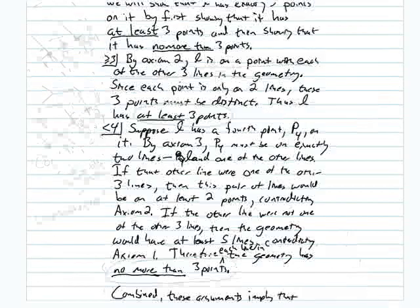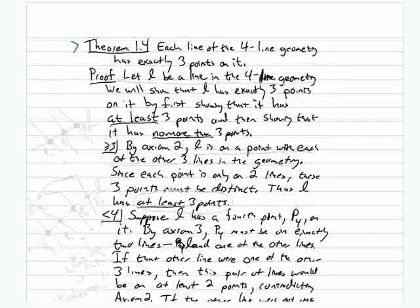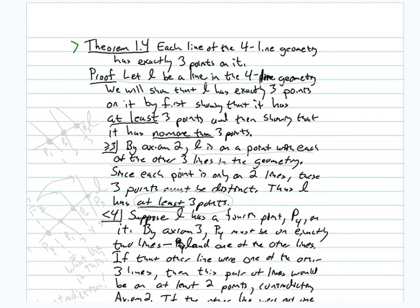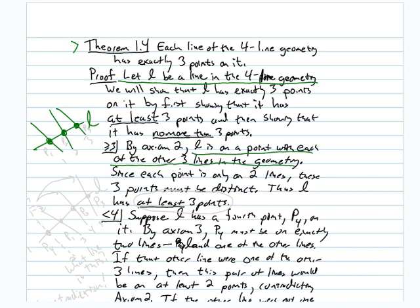My professor once ended every proof with 'and we win.' Moving on to theorem 1.4, which proves that each line in the four-line geometry has exactly three points on it. Let L be a line in the four-line geometry. Since there are four lines total, there are three other lines, and by axiom 2, L must intersect each of them at exactly one point. By axiom 3, each point is on only two lines, so those three intersection points must be distinct — call them P1, P2, and P3. So there are at least three points on L.